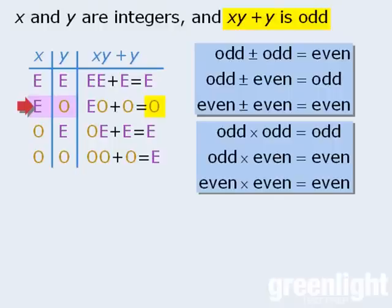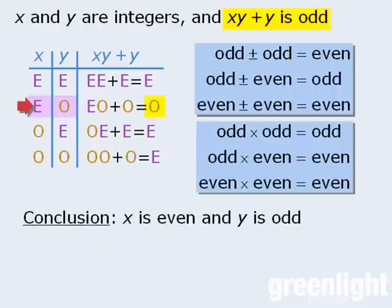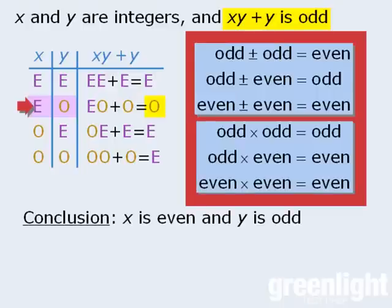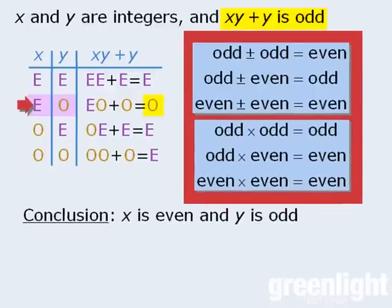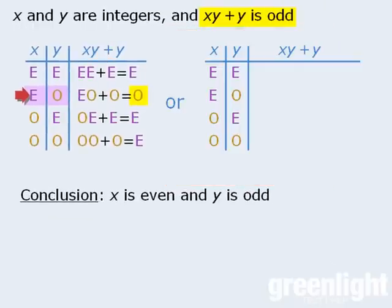So we can conclude with certainty that x must be even and y must be odd. Now some students may find it cumbersome to plug e's and o's into the expression and then apply these rules for each case. So another strategy is to plug actual numbers into the expression. For example, if x and y are both even, we can replace both variables with 2's. When we do this, our expression evaluates to be 6, which is even.